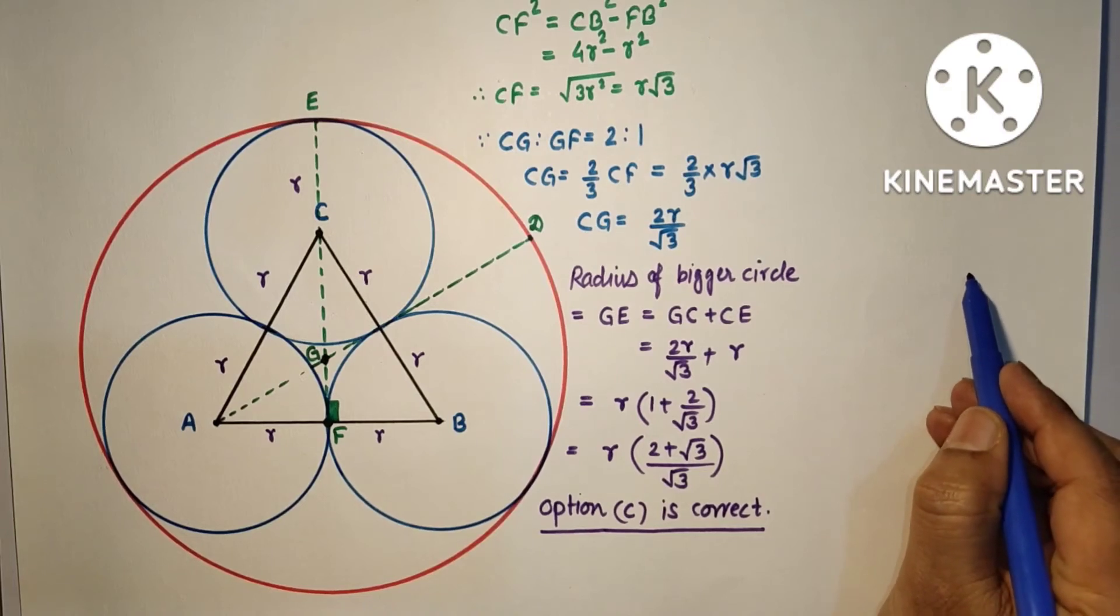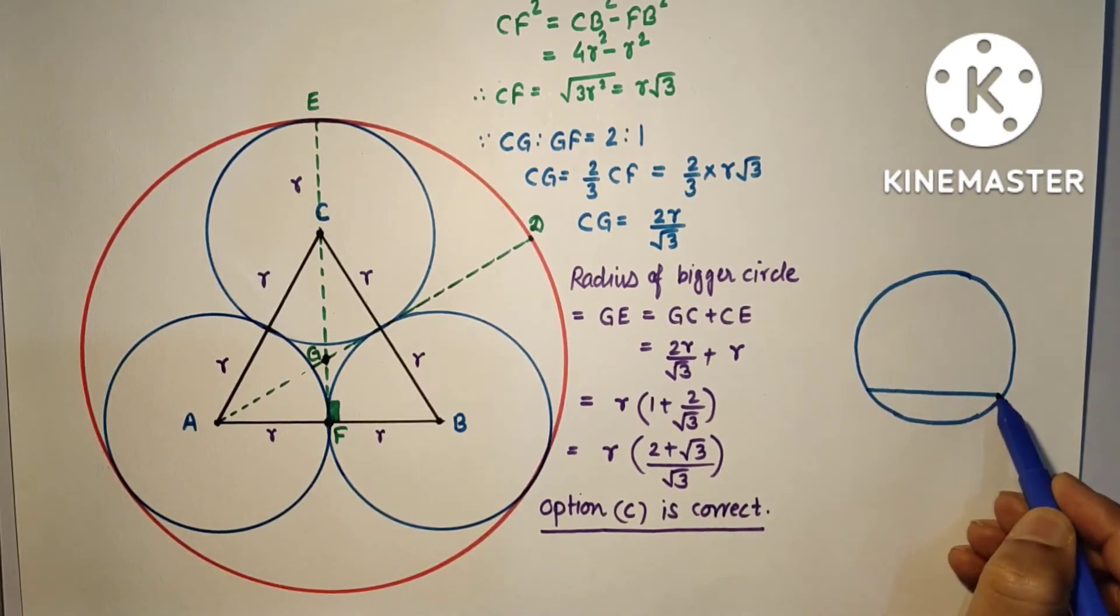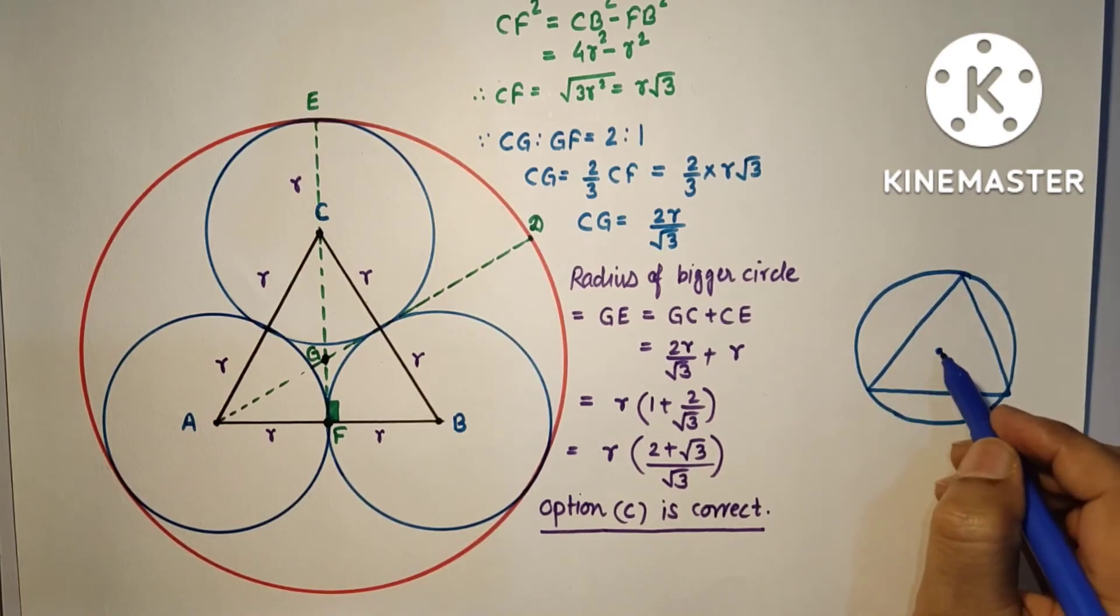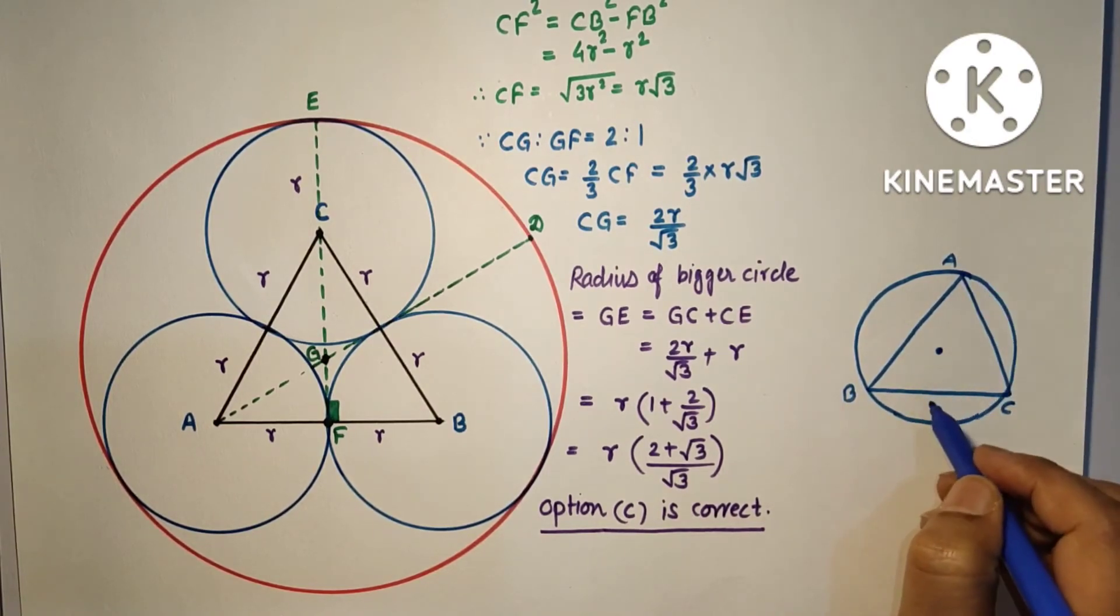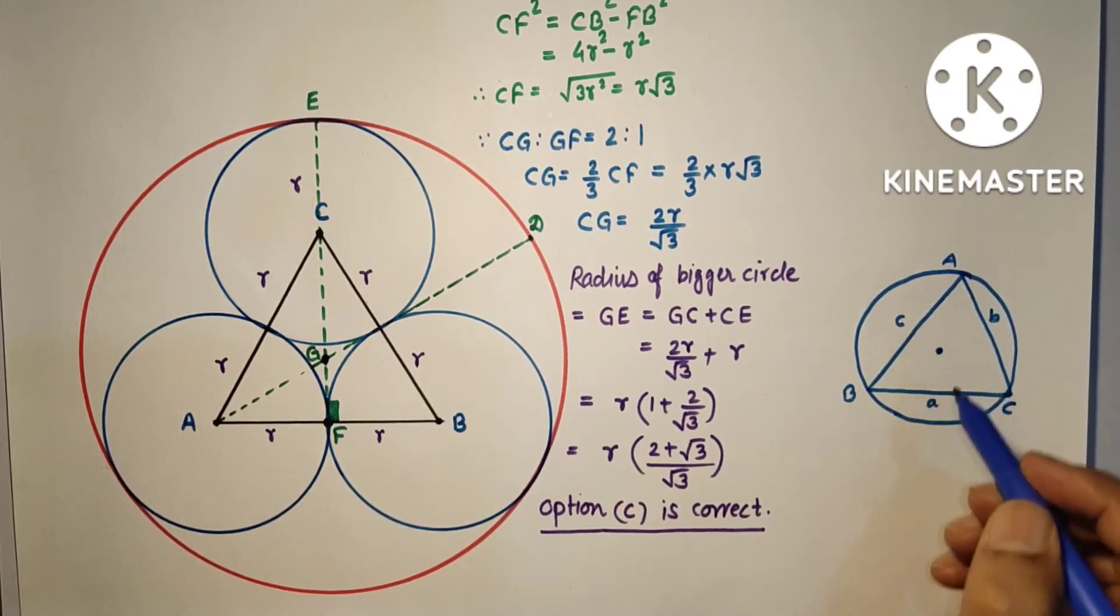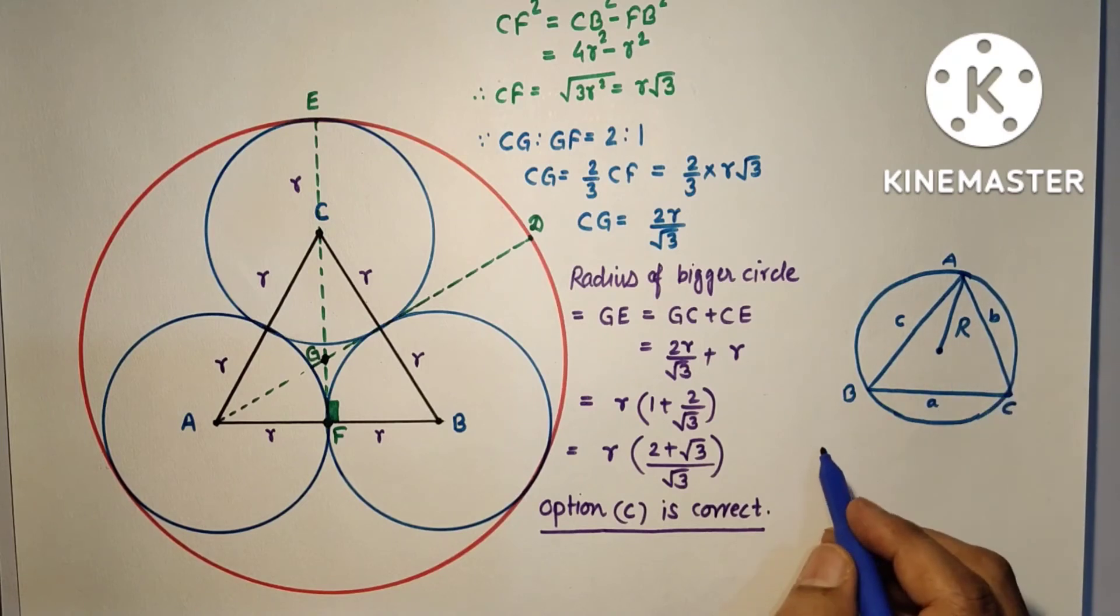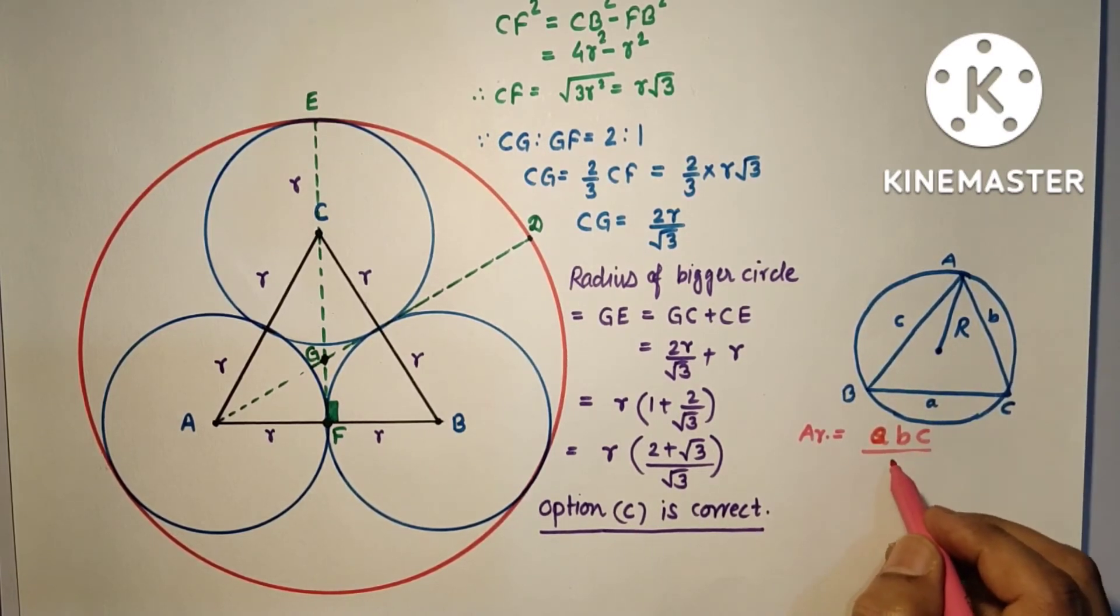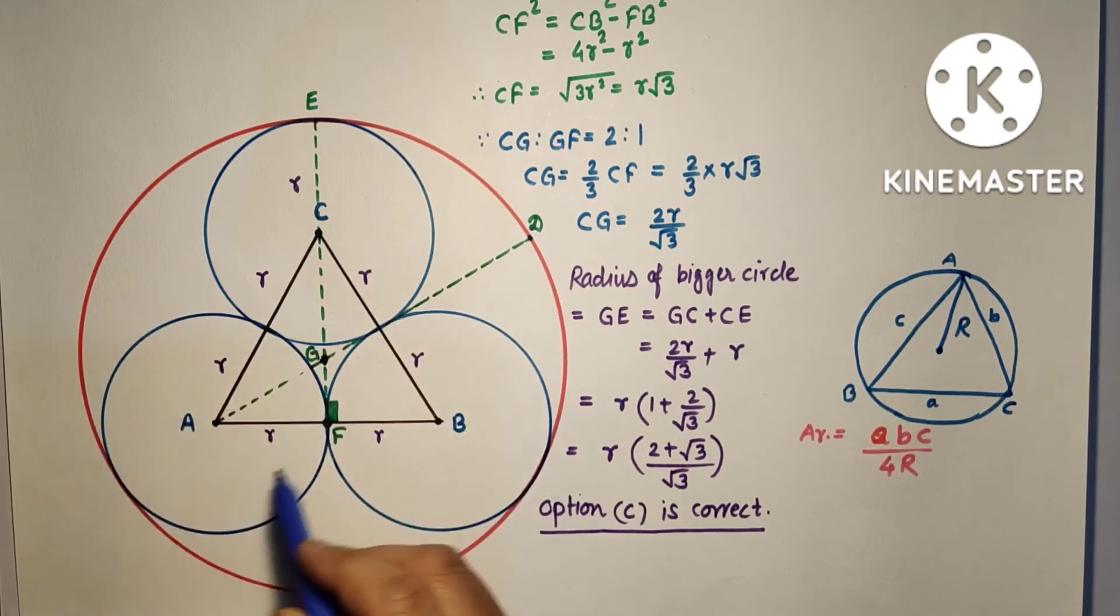So this is circumcenter, and let us suppose this is A, this is B, this is C. And from here to here this is circumradius. So area of this triangle ABC is A × B × C upon 4R. Suppose this is R, the circumradius. Using this fact, let us suppose this is the circum circle. From here to here this will be circumradius GC. This is an equilateral triangle, so area will be